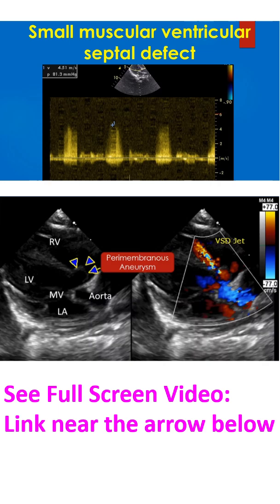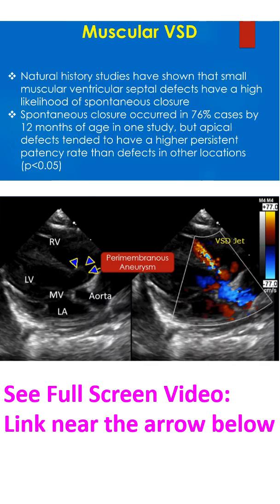Small muscular VSDs like this are likely to close spontaneously on follow-up. They will not cause pulmonary hypertension or heart failure and usually have good prognosis unless complicated by infective endocarditis. Natural history studies have shown that small muscular VSDs have a high likelihood of spontaneous closure — occurring in 76% of cases by 12 months of age in one study. Apical defects tend to have a higher persistent patency rate than defects in other locations (p-value less than 0.05).